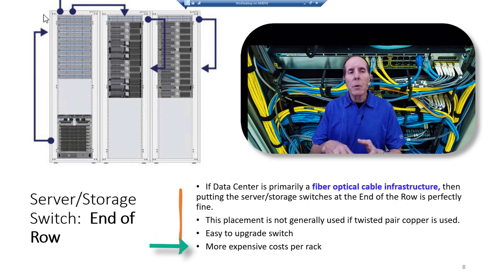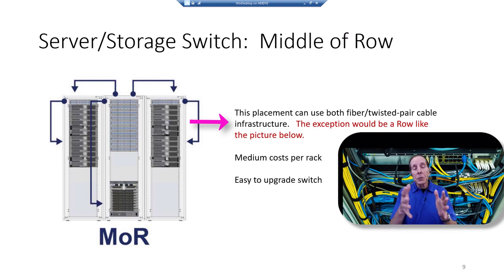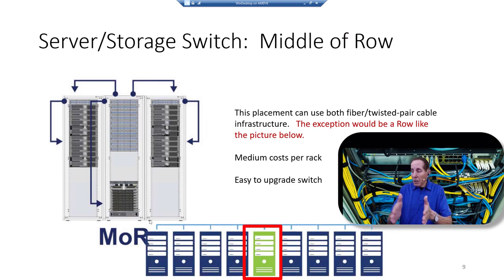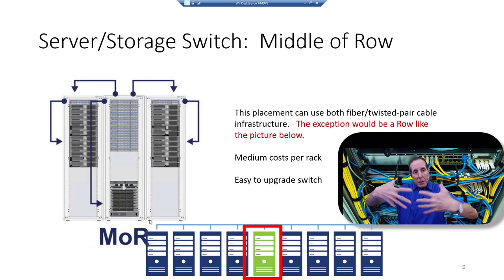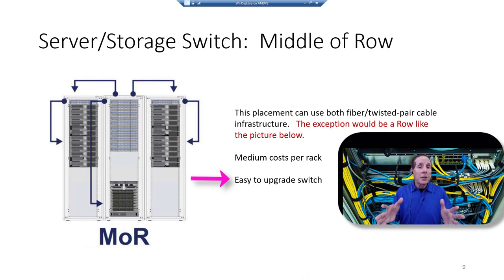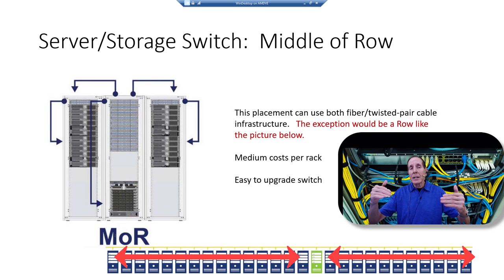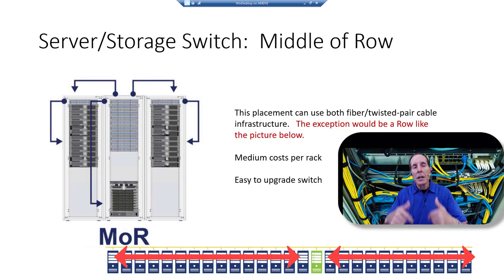End of row is more expensive cost per rack but is easy to upgrade switches. Middle of row puts all switches in the middle of the server and storage rows, connecting cabling to the center — about medium cost per rack, and easy to upgrade switches. If you're using copper cabling in a middle of row structure, sometimes the row is simply too long and the cable run distance becomes a problem.